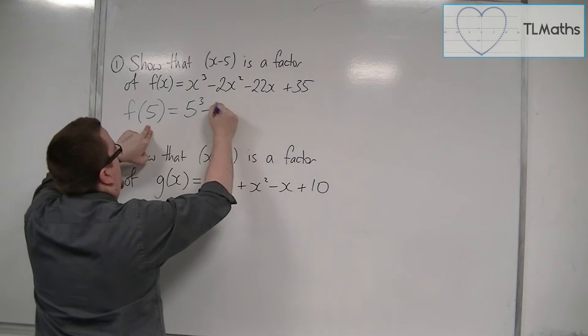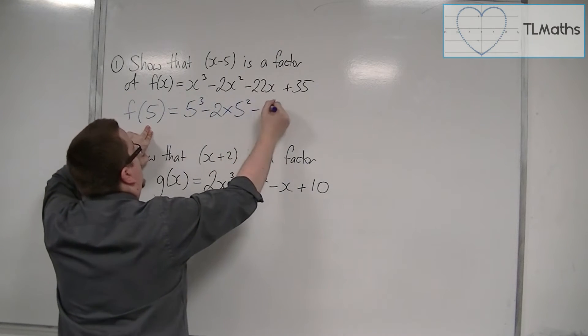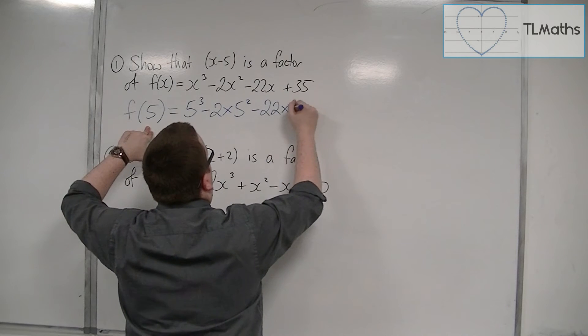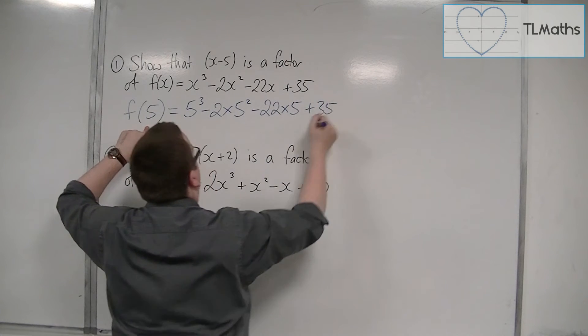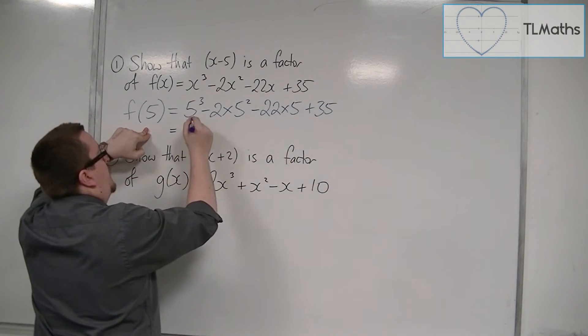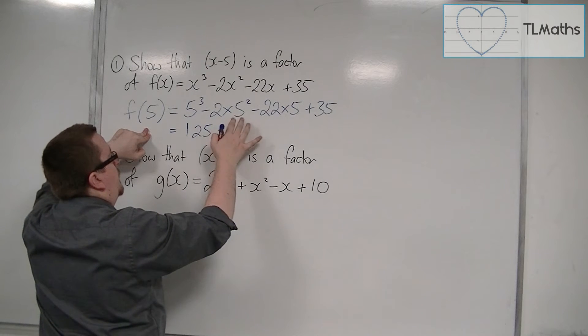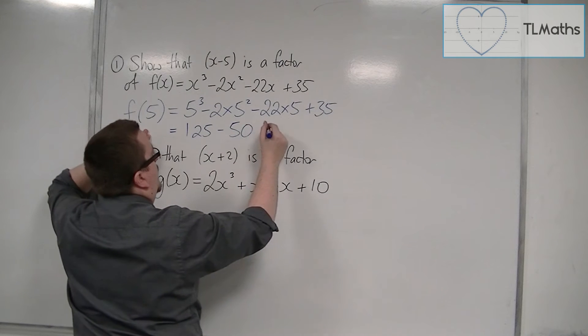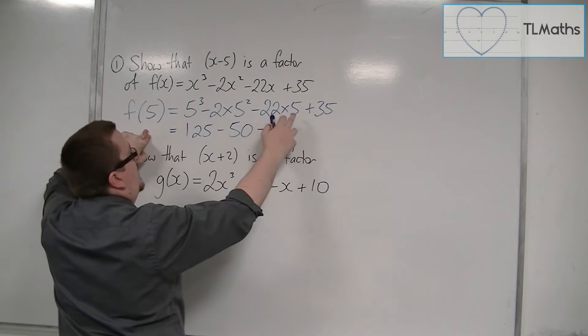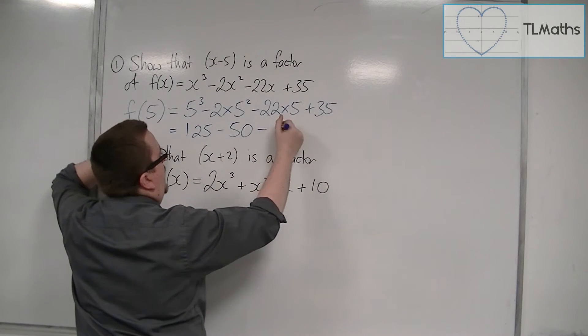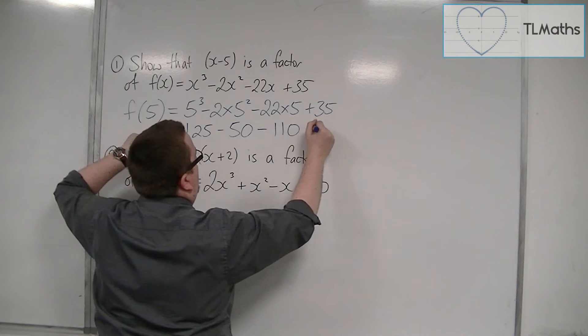We have 5 cubed, take away 2 lots of 5 squared, take away 22 lots of 5, plus 35. So 5 cubed is 125, take away 2 lots of 5 squared, so take away 50. Take away 22 lots of 5, that's 110, and then plus 35.